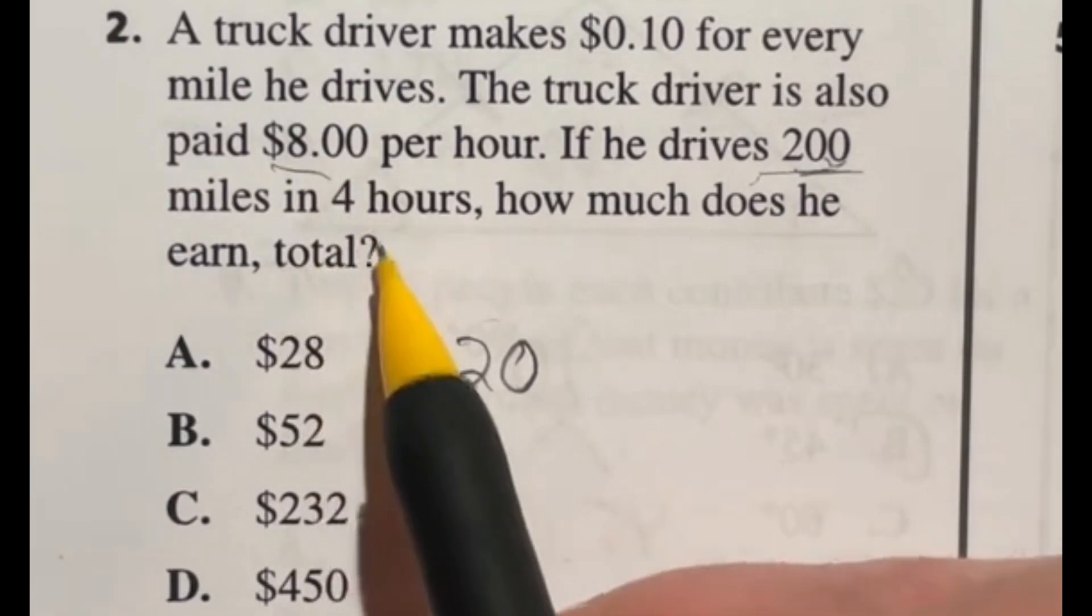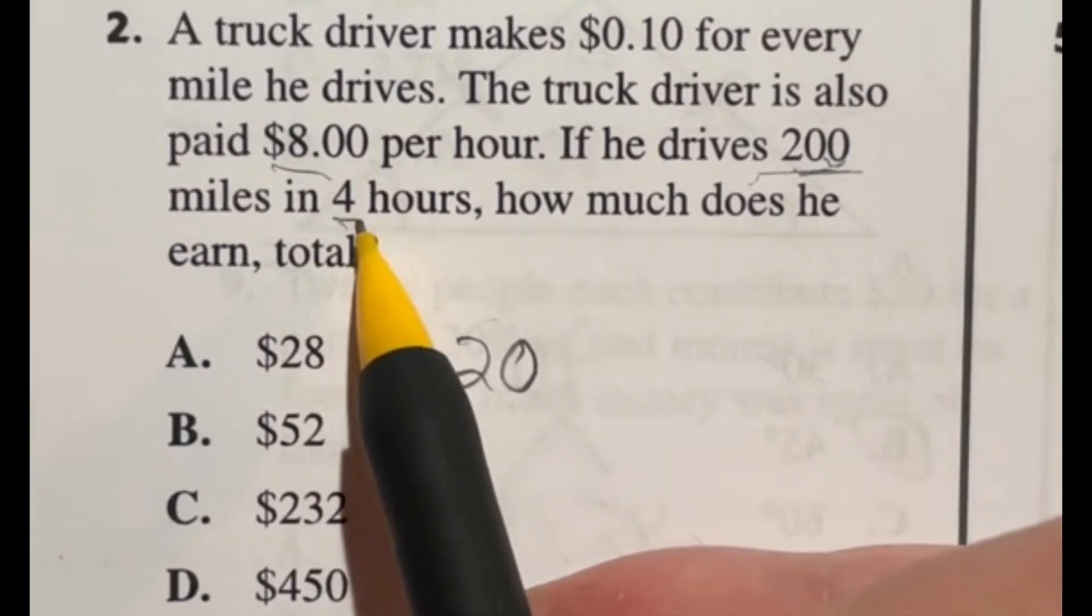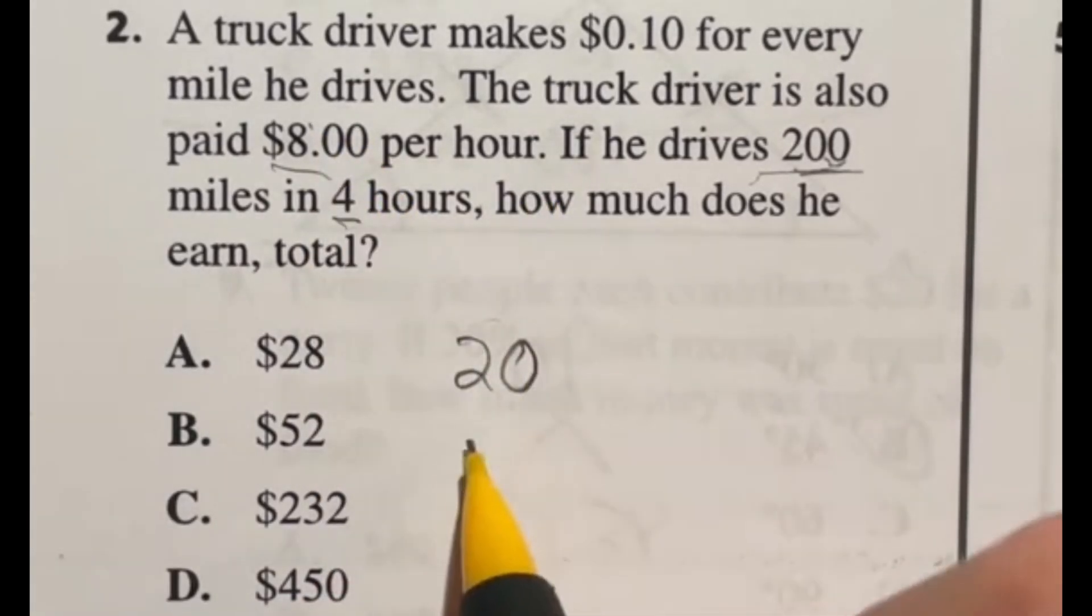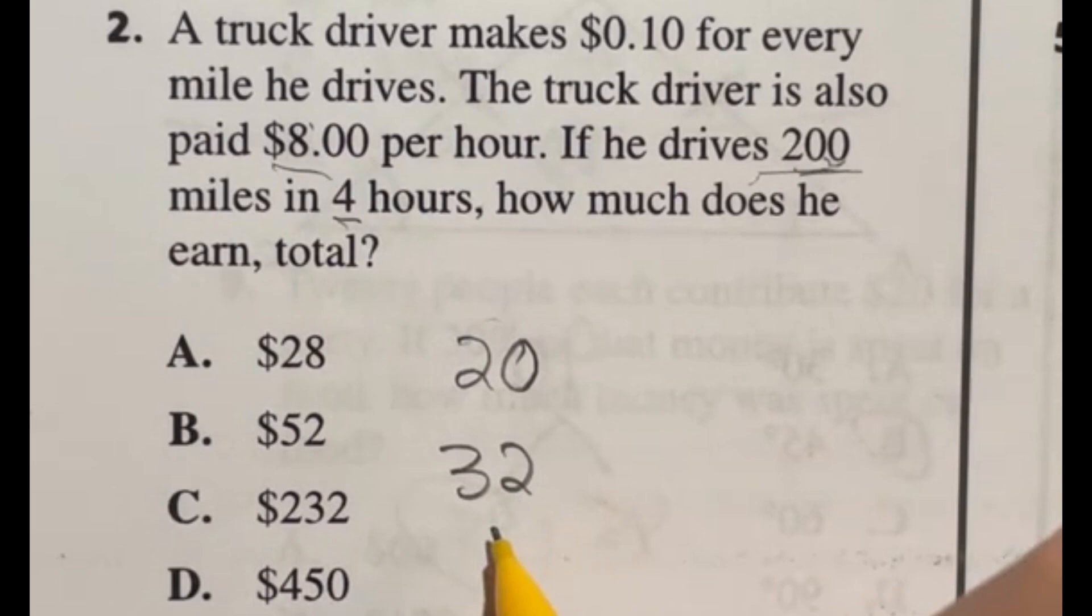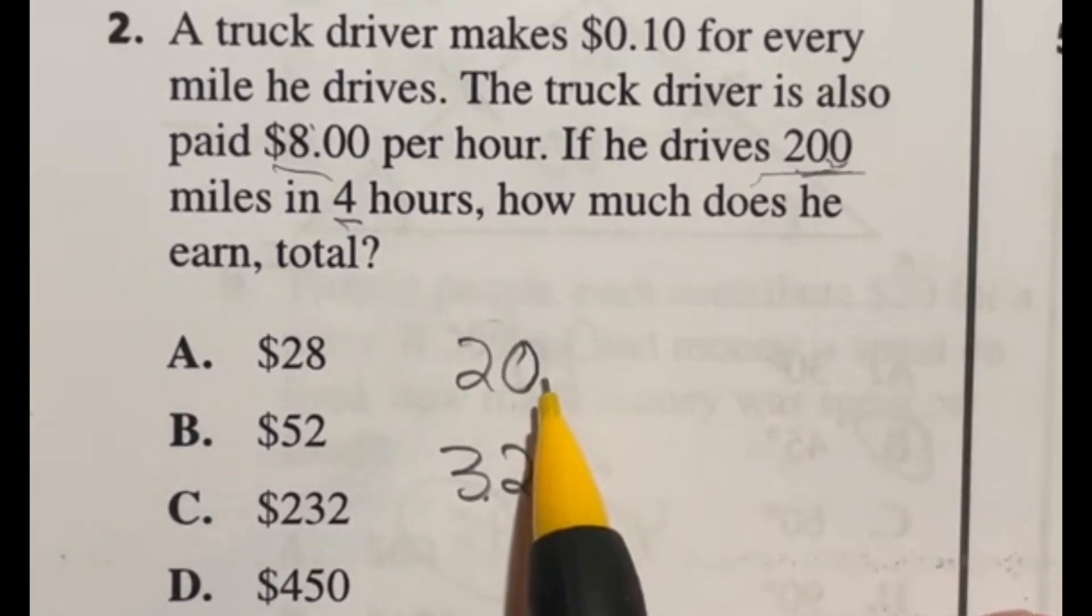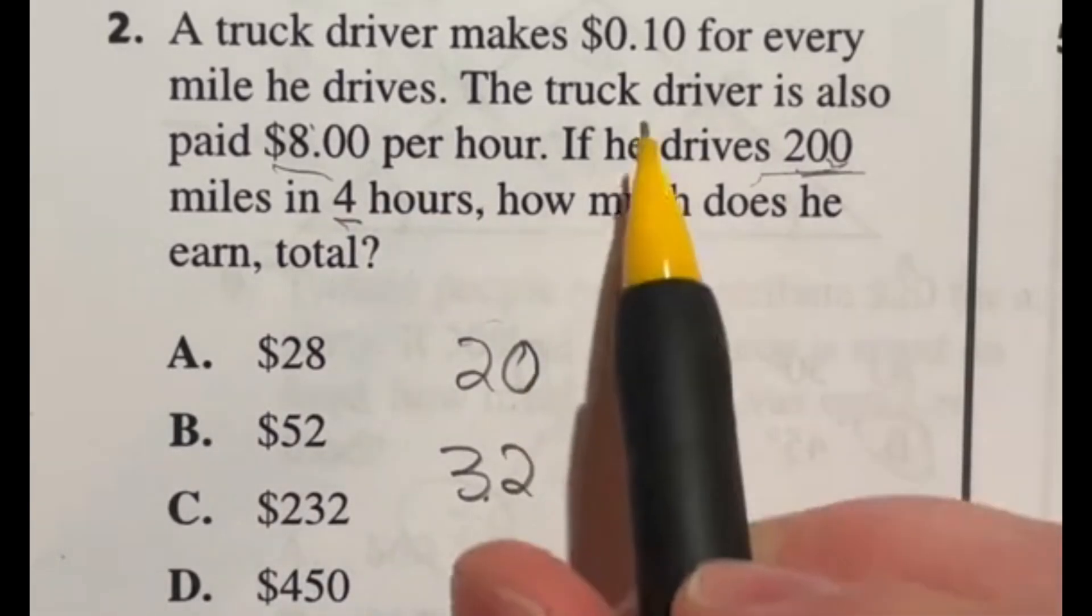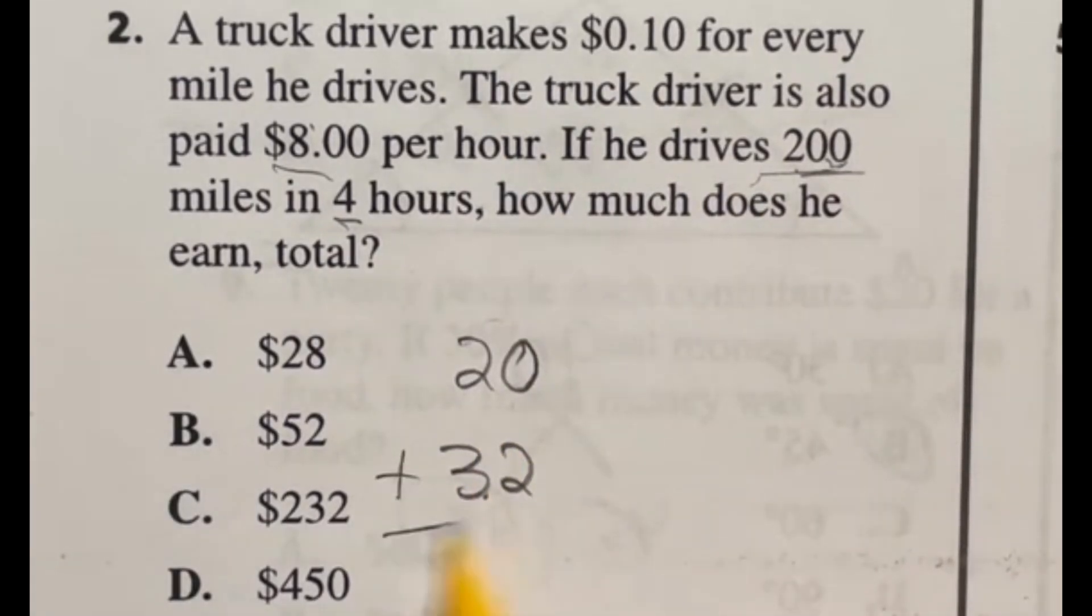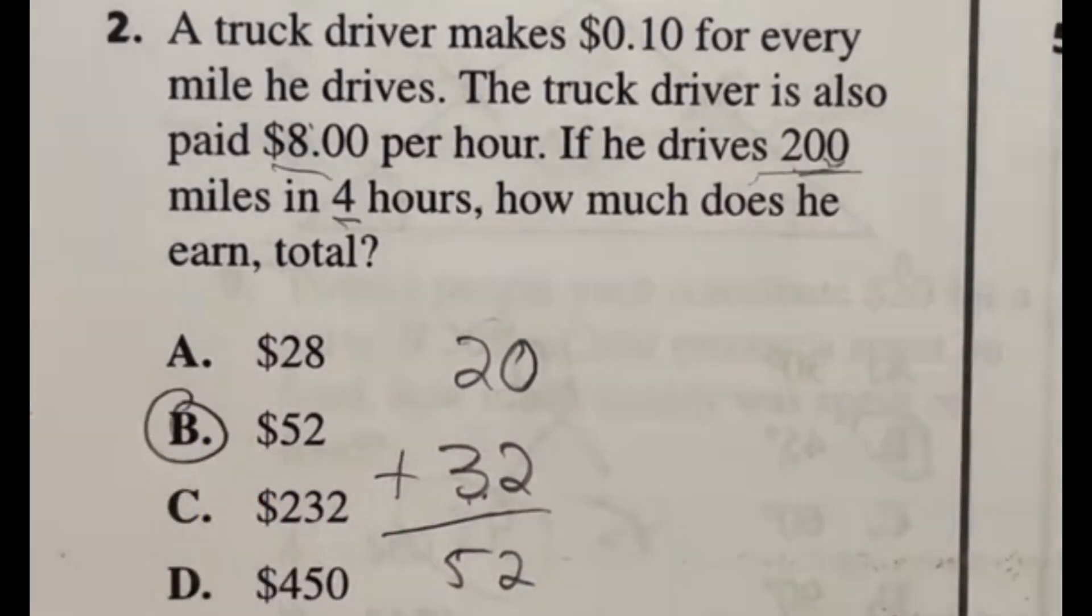Now let's go ahead and knock out that $8 per hour for four hours. Well, eight times four is going to give me 32. So now we know that he's making $32 for the pay per hour. He's making $20 for the miles he's driving. So all together, adding that up, we're going to see that he's making $52, which is answer B.